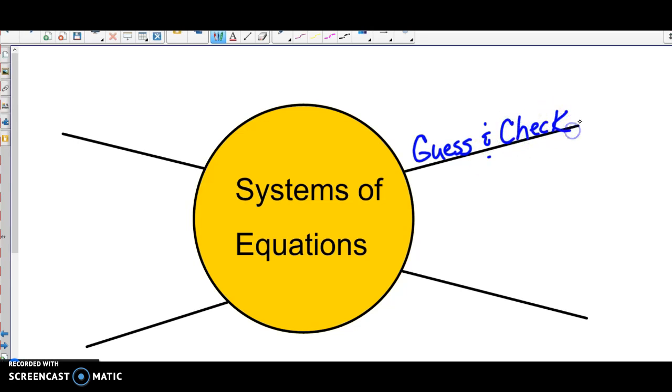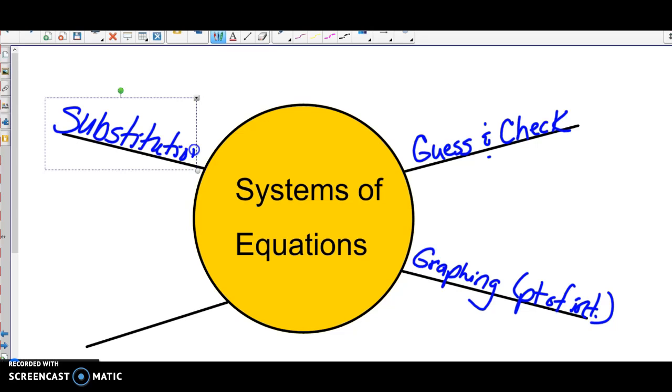Then we learned how to solve by graphing and looked for the point of intersection, and then we learned how to solve by substitution by substituting a variable in. And now this is our last one, elimination.